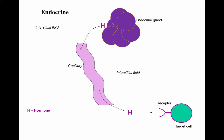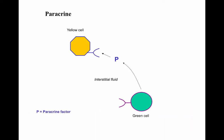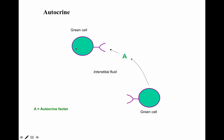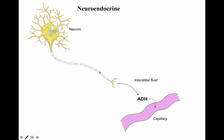Endocrine signaling means a gland releases a hormone into the bloodstream via a capillary, which travels to attach to a receptor on a target cell. Paracrine signaling is one cell releasing a factor affecting a nearby cell. Autocrine signaling is a cell releasing a factor that affects itself. Neuroendocrine signaling, for example, is a neuron activating anti-diuretic hormone from the hypothalamus to the pituitary, then into a capillary to affect kidney function — nervous system influence producing an endocrine outcome.